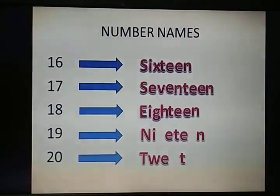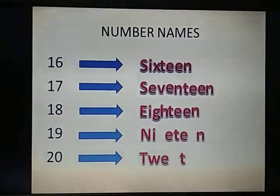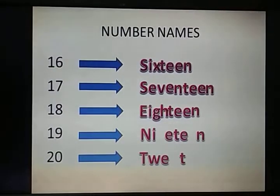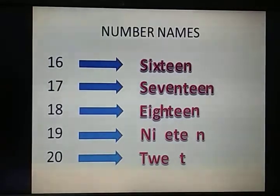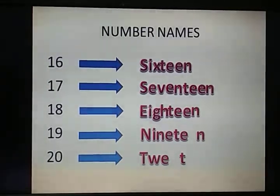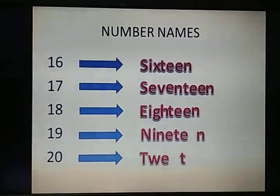Spelling of 19. N, I. What is the spelling of 9? N, I, N, E. So which letter is missing? N. N, I, N, E — 9. Teen — T, double E, N. One E is missing.